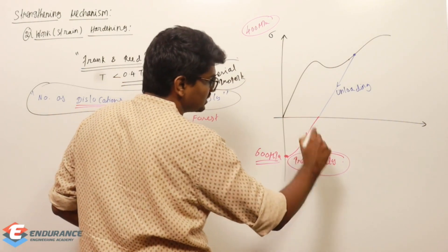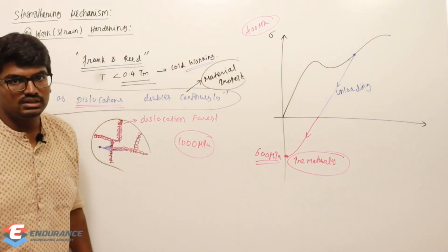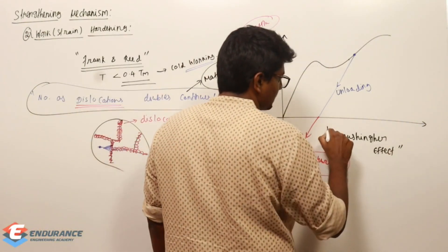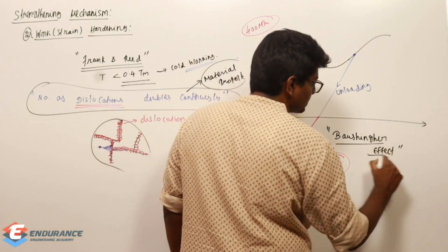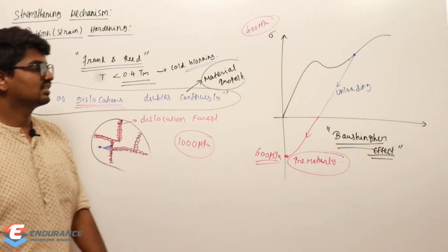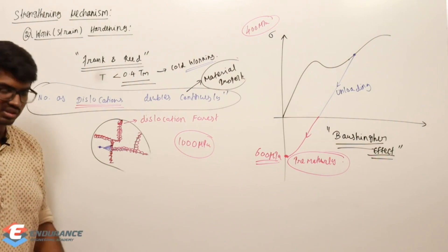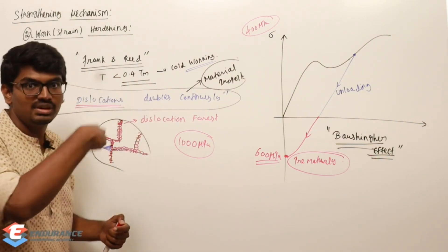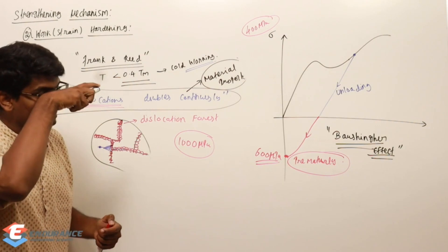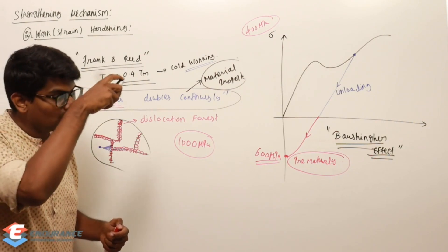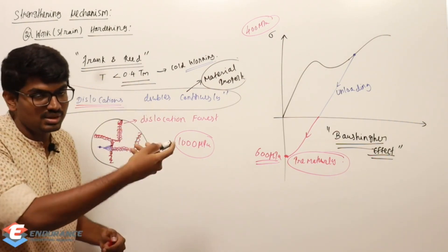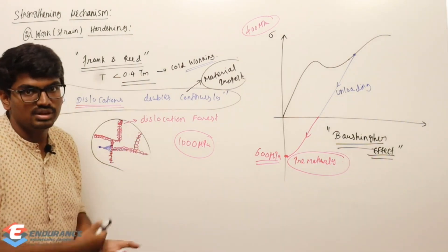This effect — where unloading from the strain hardening region and loading in the opposite direction causes premature yielding — is called the Bauschinger effect.